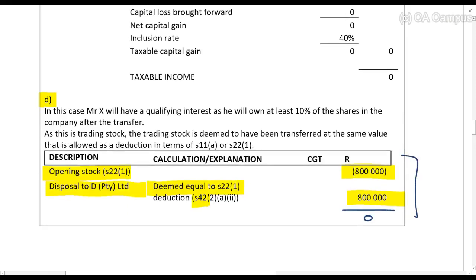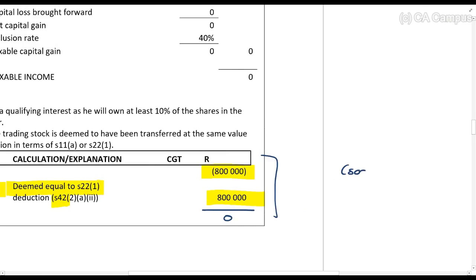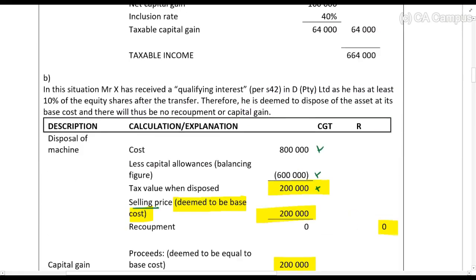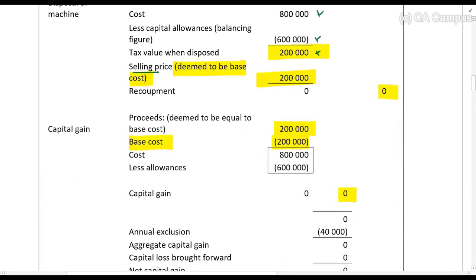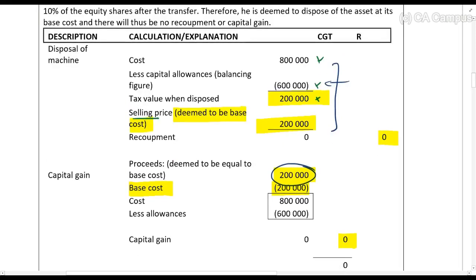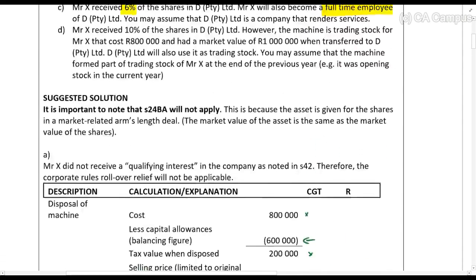For the company: in part D the company is treated as if they have an 800,000 rand stock deduction. For parts B and C, where there was nothing for Mr. X, the company is treated as if it purchased the asset with a 200,000 rand cost remaining, and can claim capital allowances in the same way the previous taxpayer did — written off over the remaining equal period.